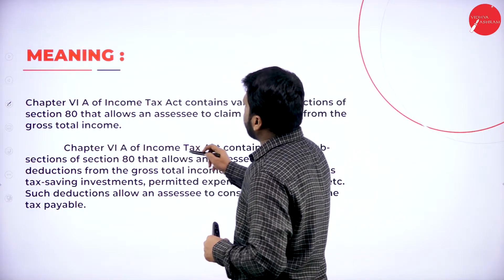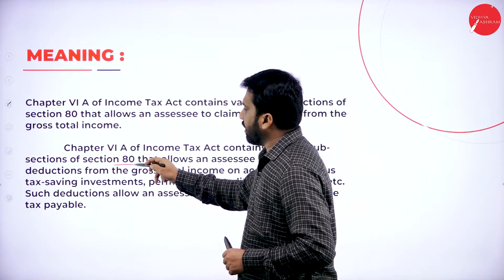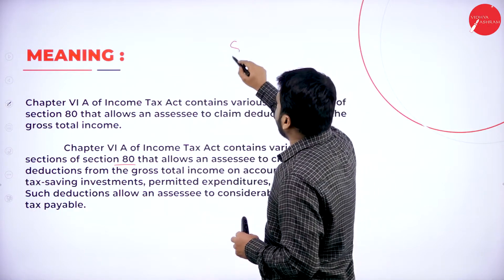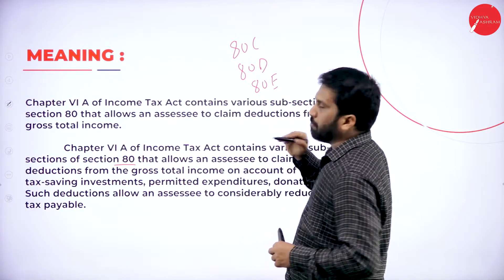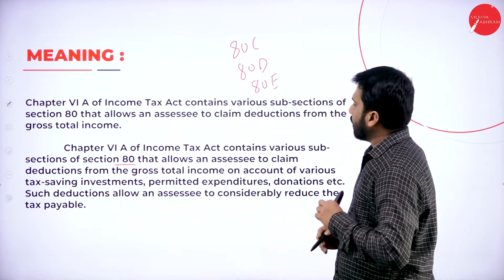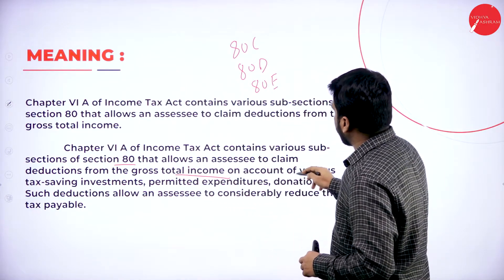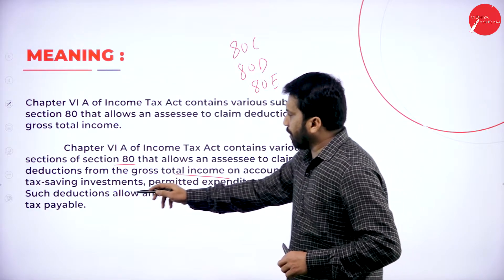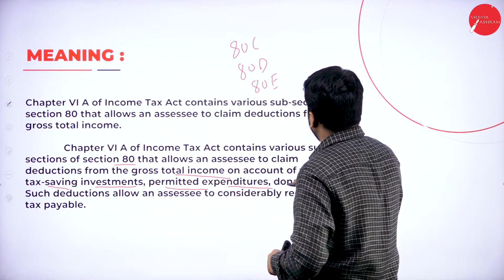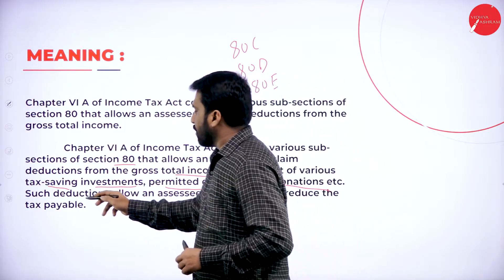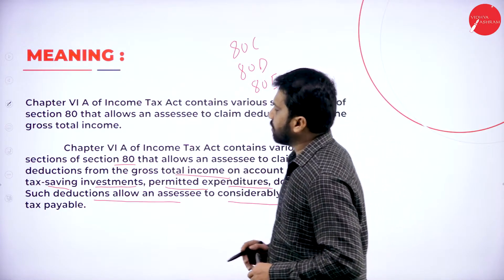Chapter 6A of the Income Tax Act contains various subsections of Section 80. Under Section 80, you have 80C, 80D, 80E — like that, many subsections you will get. It allows an assessee to claim deduction from the gross total income on account of various tax-saving investments, permitted expenditure, donations, etc. Such deductions allow an assessee to considerably reduce the tax payable.